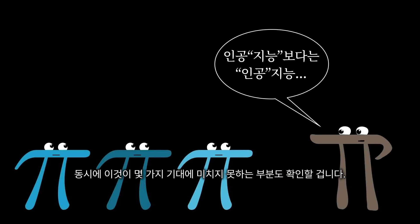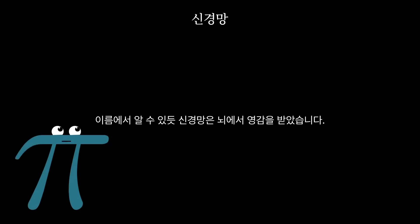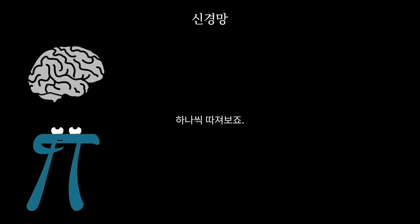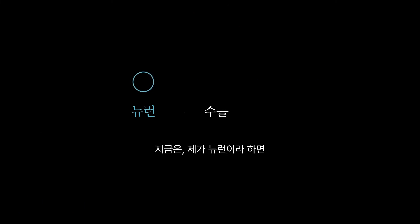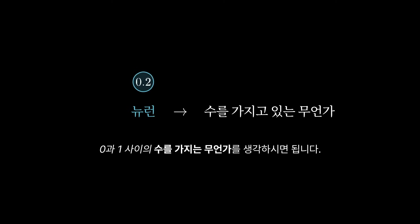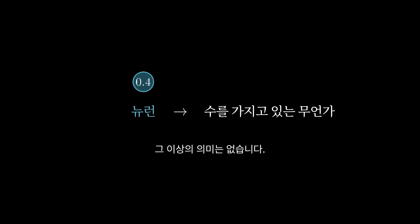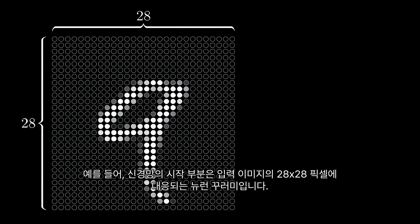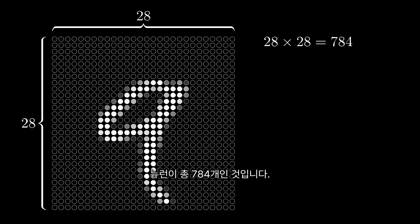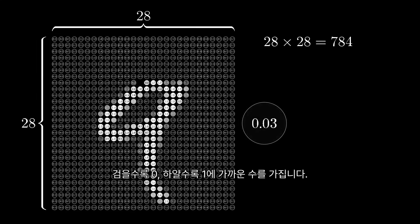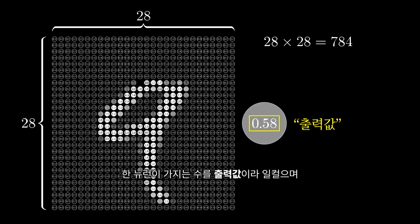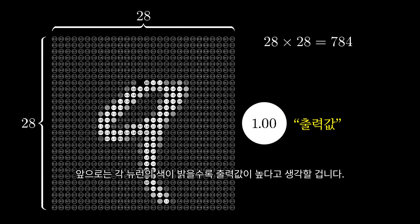And at the same time, you'll see how it does fall short of a couple hopes that we might have for it. As the name suggests, neural networks are inspired by the brain. But let's break that down. What are the neurons, and in what sense are they linked together? Right now, when I say neuron, all I want you to think about is a thing that holds a number — specifically a number between 0 and 1. It's really not more than that. The network starts with a bunch of neurons corresponding to each of the 28x28 pixels of the input image, which is 784 neurons in total. Each one of these holds a number that represents the grayscale value of the corresponding pixel, ranging from 0 for black pixels up to 1 for white pixels. This number inside the neuron is called its activation. And the image you might have in mind here is that each neuron is lit up when its activation is a high number.